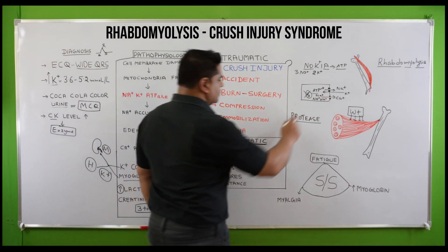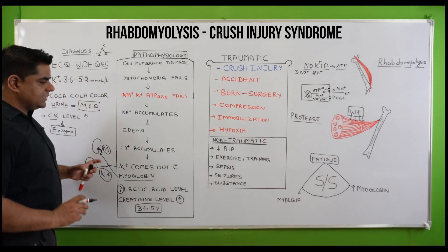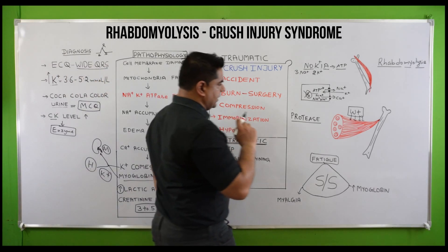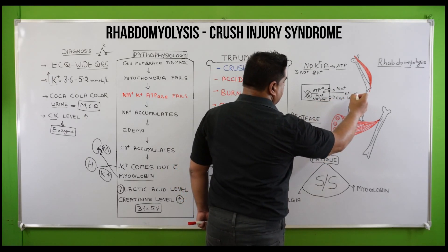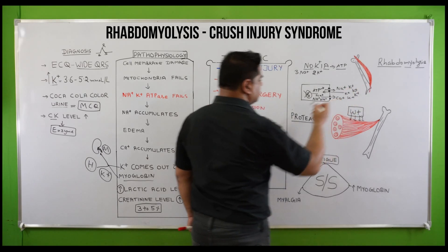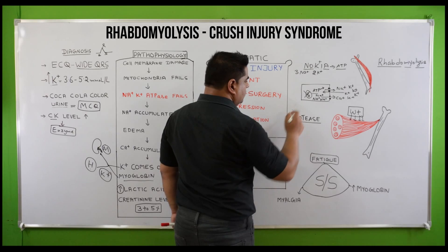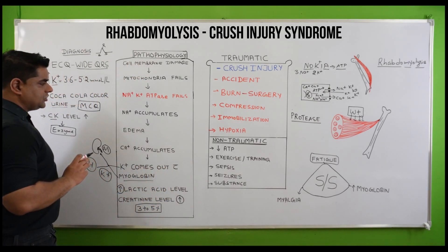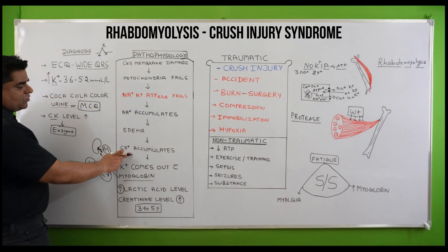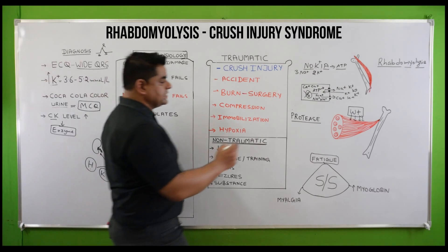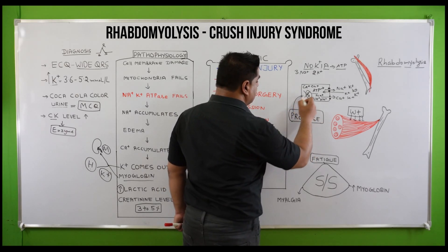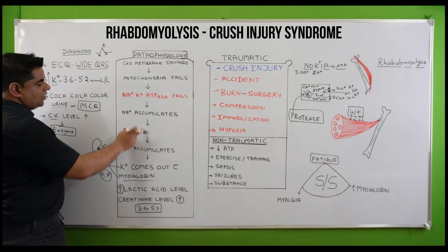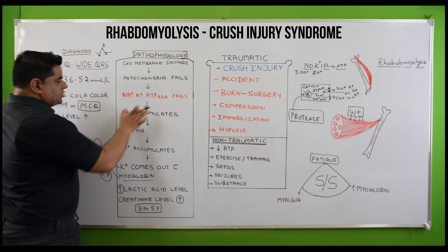Sodium accumulation causes water accumulation, leading to edema — peripheral edema. Potassium goes out and becomes heavily present in extracellular content. Calcium is also not able to go out, and its accumulation causes activation of protease enzymes, which are enemies of mitochondria. This leads to more damage to the mitochondria and further deficiency of ATP.